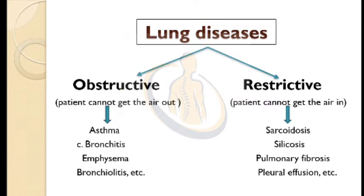Lung diseases can be divided into two types: obstructive and restrictive. In obstructive, the patient cannot get the air out. It includes asthma, chronic bronchitis, emphysema, bronchiolitis, etc. In restrictive, the patient cannot get the air in. It includes sarcoidosis, silicosis, pulmonary fibrosis, pleural effusion, etc.